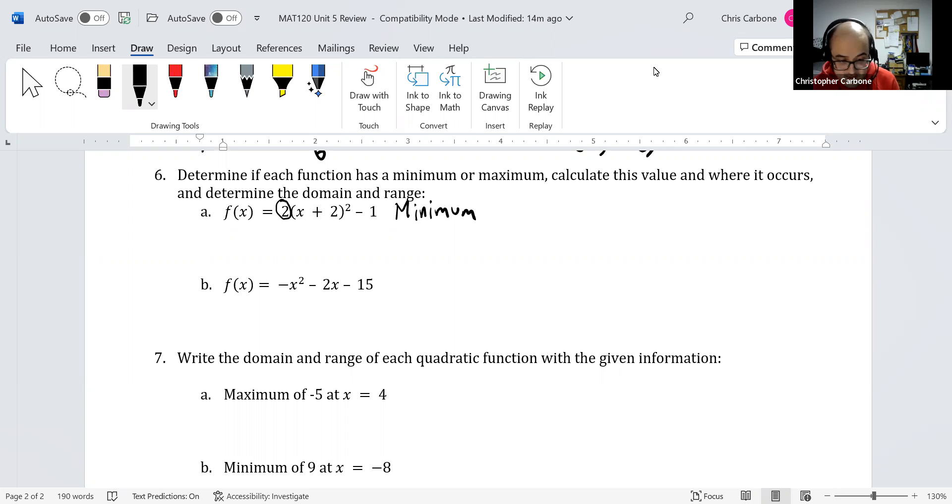The specific value of this minimum would be at the point of the vertex, so (-2, -1).